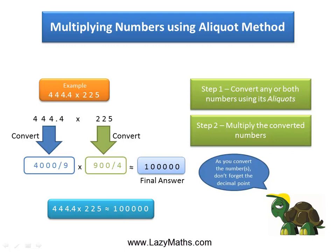So 444.4 times 225 is approximately equal to 100,000. And that's it.